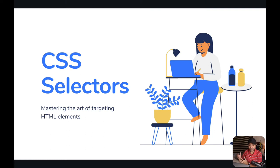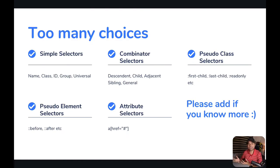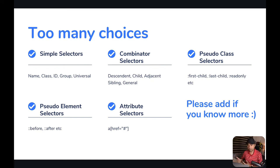CSS selectors: mastering the art of targeting HTML elements. You have too many choices when it comes to selecting and styling HTML elements. There are five different categories of selectors we're going to learn today. First: simple selectors — name, class, ID, group, universal. Second: combinator selectors — descendant, child, adjacent sibling, general. Third: pseudo-class selectors — first-child, last-child, read-only, etc. Fourth: pseudo-element selectors — before, after. Fifth: attribute selectors. I'll cover each category in detail.